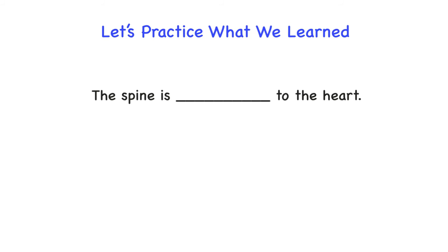Try this: the spine is blank to the heart. The answer is posterior — the spine is posterior to the heart. This is the most correct answer because the spine lies closer to the back of the body than the heart does, making posterior the most appropriate way to describe their relationship.